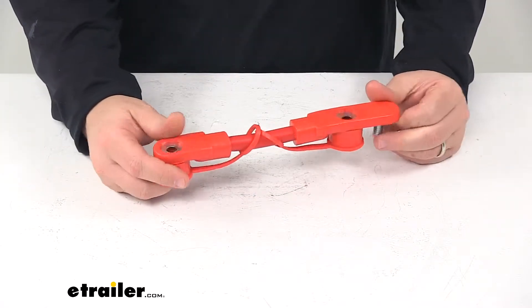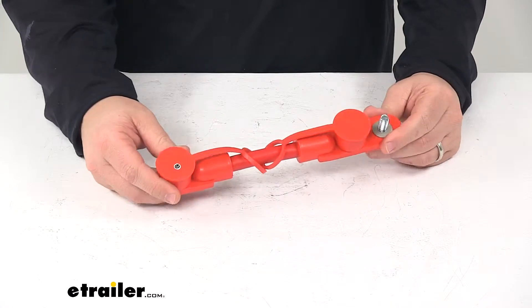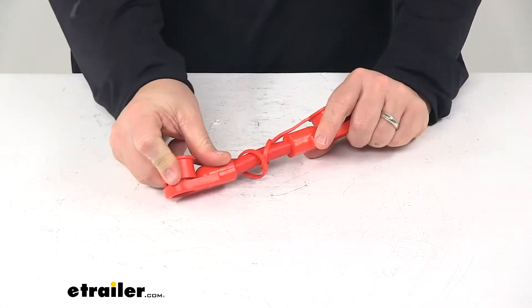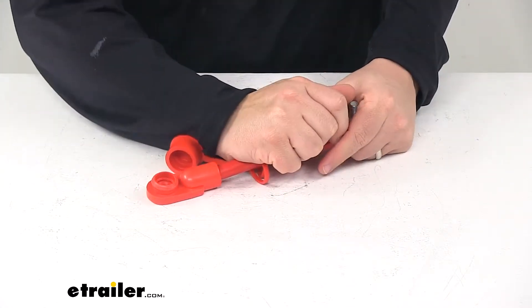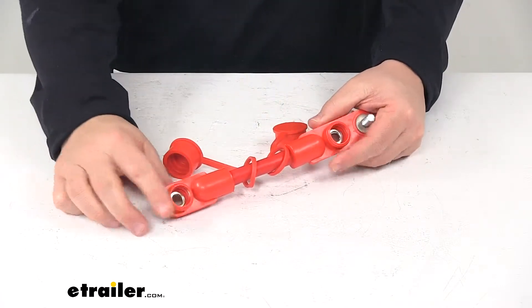Today we're taking a look at a DECA Overmolded Battery Cable Harness Assembly. Now this is a really simple design. What this does is it simply connects two batteries together.